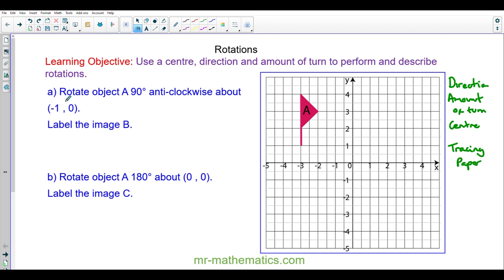Okay, so we're going to rotate object A. This is object A. When we have completed the rotation we will have an image. So we begin with an object, we perform our rotation, and we have an image.